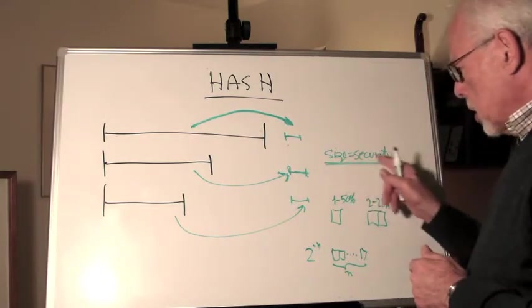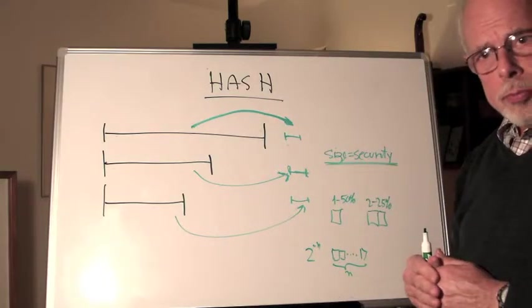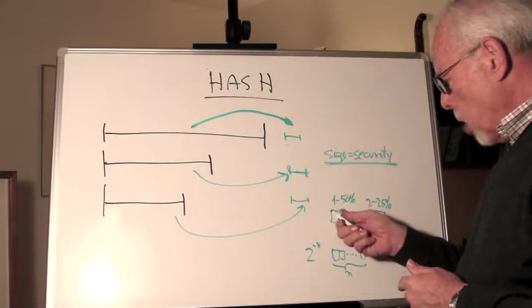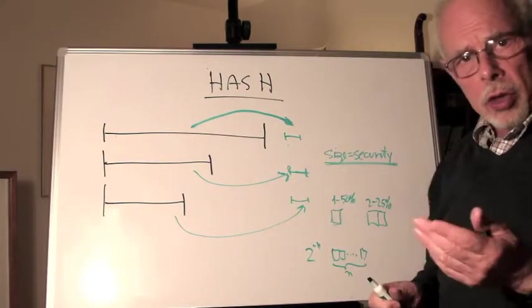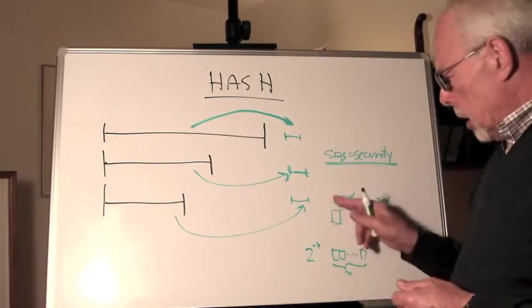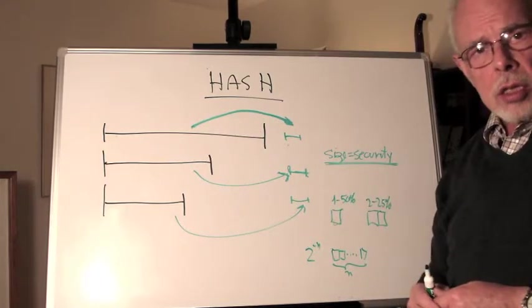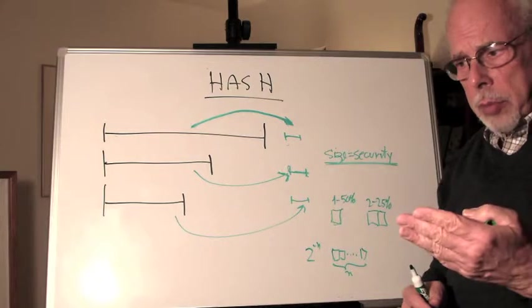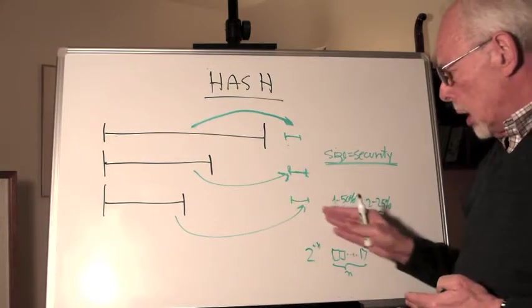Also remember that size equals security. In the extreme case when we hash into one bit, like an error correction code, the hacker has a 50% chance to come up with a pre-hash that will map, that will agree with the hash because there are only two possibilities.